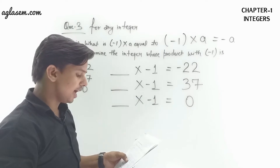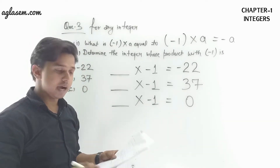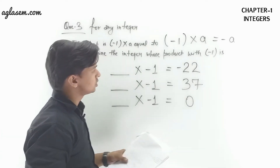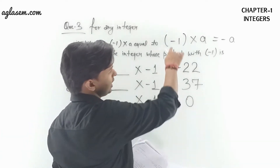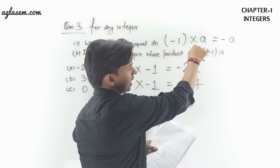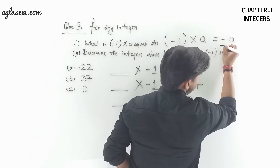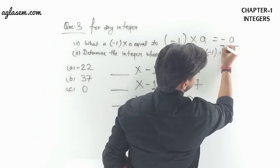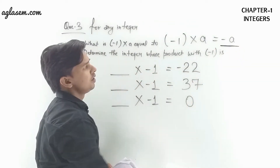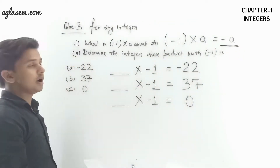Now coming to question number 3: for any integer a, what is (-1) × a equal to? Any integer multiplied by -1 will give a negative value, because when we multiply any positive value with a negative value, the result is negative.